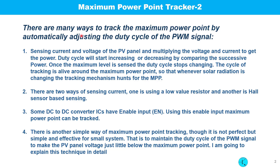There are many ways to track the maximum power point by automatically adjusting the duty cycle of the PWM signal — sensing current and voltage of the PV panel and multiplying them to get the power. The duty cycle starts increasing or decreasing by comparing successive power values. Once the maximum level is reached, the duty cycle stops changing. The tracking cycle remains active around the maximum power point so that whenever solar radiation changes, the tracking mechanism hunts for the MPP.